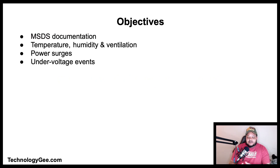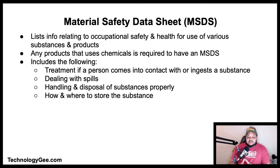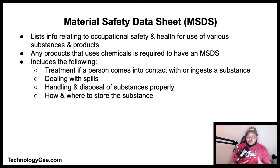Such as material safety data sheet documentation, temperature, humidity level awareness, and proper ventilation, power surges and under-voltage events. A material safety data sheet is a document that lists information relating to occupational safety and health for the use of various substances and products. Any product that uses chemicals is required to have an MSDS, and the MSDS includes information pertaining to the treatment if a person was to come in contact with or ingest some type of substance, and dealing with some type of spill.